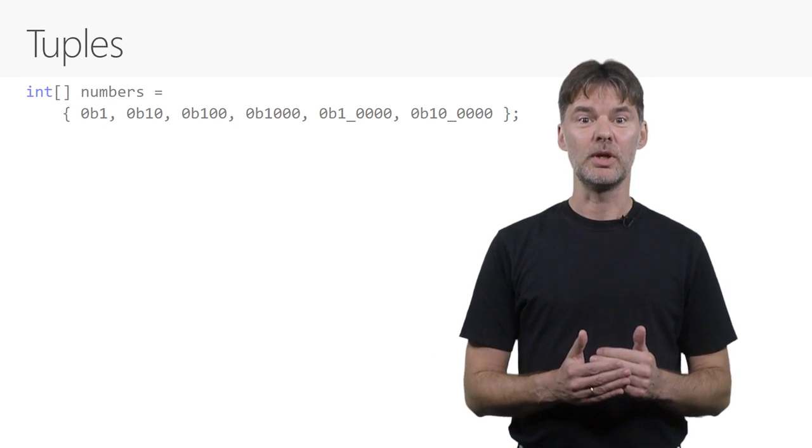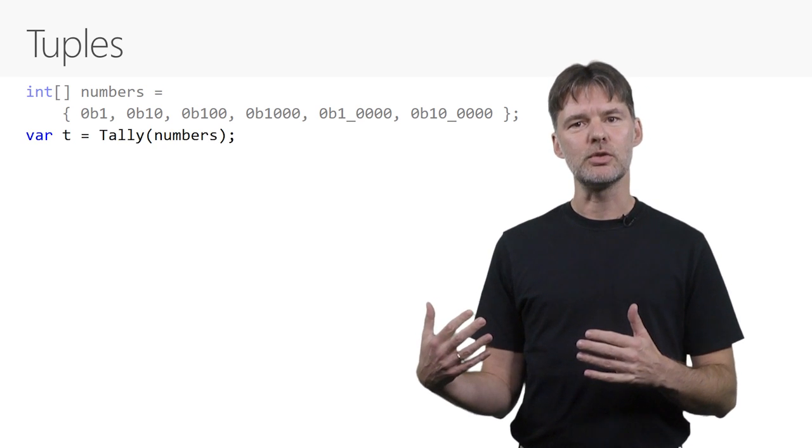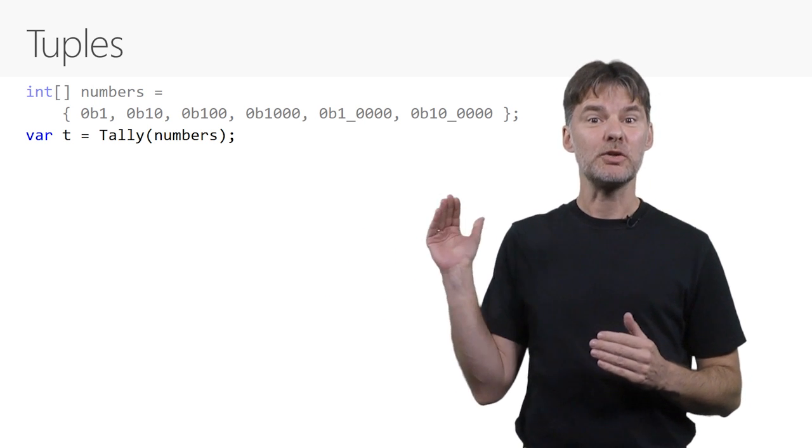Now let's talk about tuples, one of the major features of C# 7.0. Let's say we want to write a tally function to compute the sum and the count of the numbers we give it. We want it to have two results.